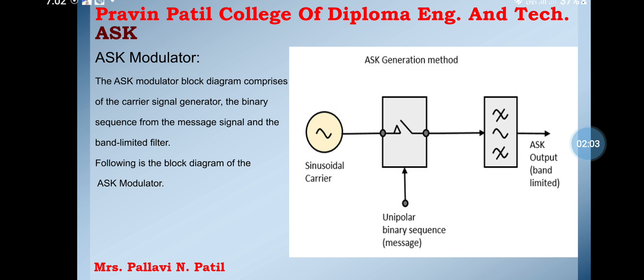The ASK modulator block diagram comprises the carrier signal generator, the binary sequence from the message signal, and the band-limited filter. This is the block diagram of the ASK modulator.